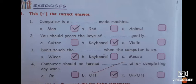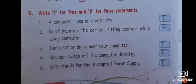Next B is write T for true and F for false statements. So first is a computer runs on electricity: true. Don't maintain the correct sitting posture while using computer: false.